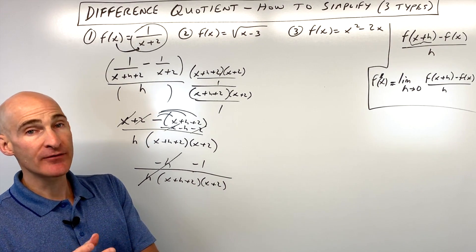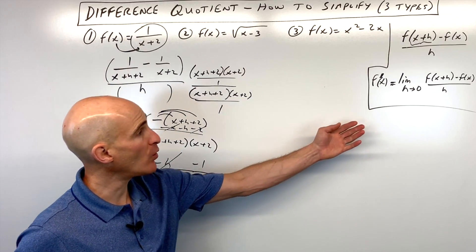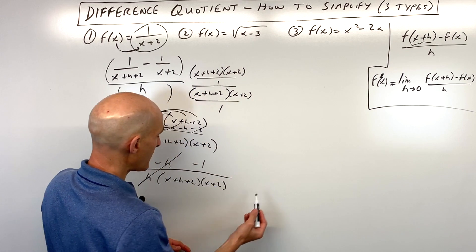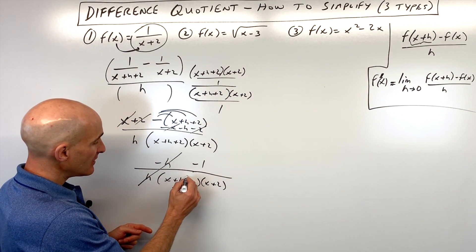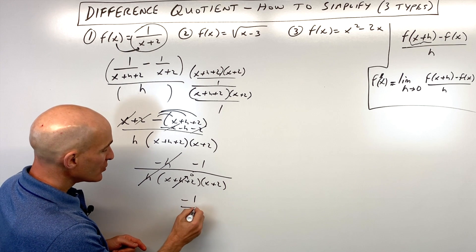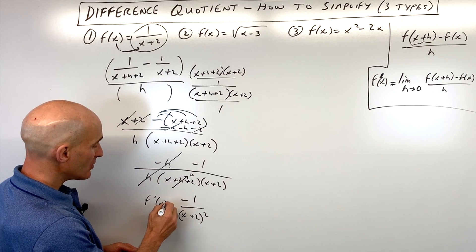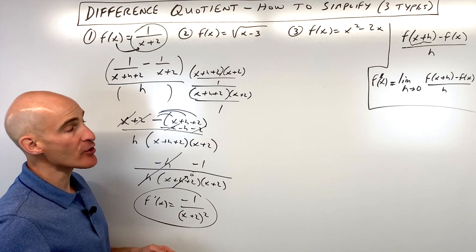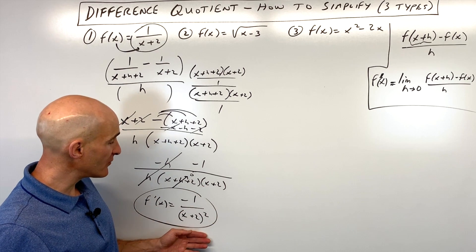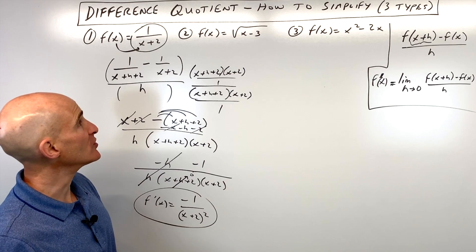Negative one over that denominator is your difference quotient — you can leave it at that stage. But if you want to find the derivative, take the limit as h approaches zero. The h goes to zero, and we have x plus two times x plus two, giving us negative one over x plus two squared. That's your derivative.